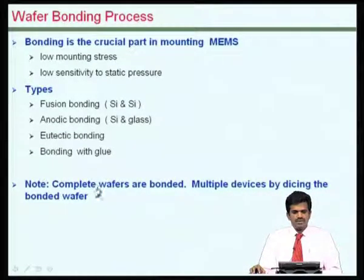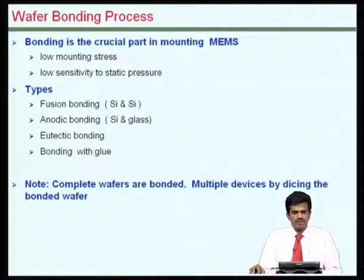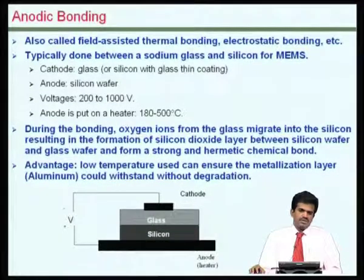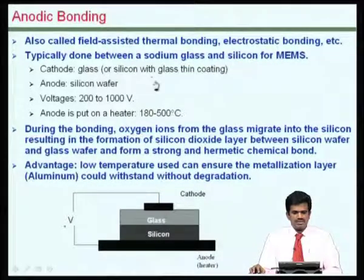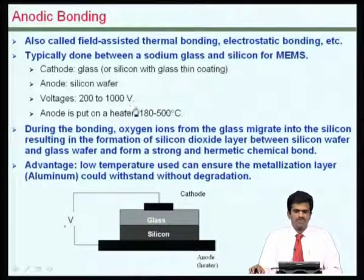One thing to note is that this bonding is usually between two complete wafers — not a part of one device being added to a part of another. It is a batch approach of fabrication. One of the approaches for bonding two silicon wafers is by anodic bonding. As the name suggests, electrodes are used, a potential is applied between them, sufficient contact force and pressure are needed, and a temperature of the order of 400 degrees centigrade is also applied to enable the bonding.